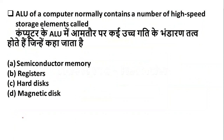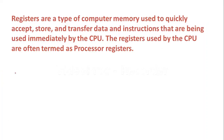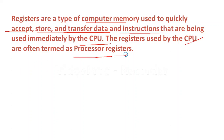ALU of a computer normally contains a number of high-speed storage elements called — Option A: semiconductor memory. Option B: registers. Option C: hard disk. Option D: magnetic disk. Here the right answer is Option B — register. Registers are a type of computer memory used to quickly accept, store, and transfer data and also instructions that are being used immediately by the CPU. The registers used by the CPU are often termed as processor registers.